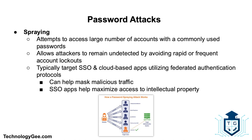During a password spray attack, also known as the low and slow method, the malicious actor attempts a single commonly used password such as 'password1' against many accounts before moving on to attempt a second password, and so on. This technique allows the actor to remain undetected by avoiding rapid or frequent account lockouts. Password spray campaigns typically target single sign-on and cloud-based applications utilizing federated authentication protocols, which can help mask malicious traffic and maximize access to intellectual property if the attacker succeeds.